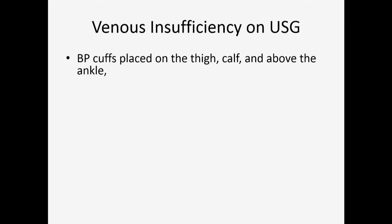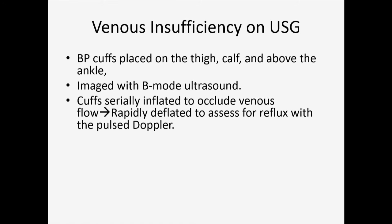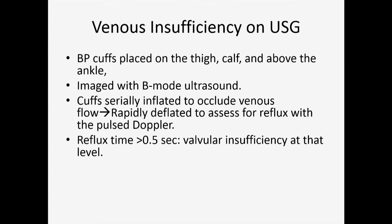What are the steps to diagnose venous insufficiency? Blood pressure cuffs are placed at the thigh, calf, and above the ankle. We image in B-mode ultrasound, and then cuffs are serially inflated to occlude the venous flow and then rapidly deflated so that we can look for reflux of more than five seconds.